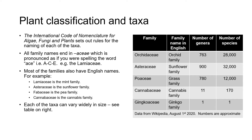As you can see from the table on the right, each of the taxa can vary hugely in size. The sunflower family, the Asteraceae, is the largest family in the world with about 32,000 species in it. The ginkgo family has just one species, Ginkgo biloba, the ginkgo tree.